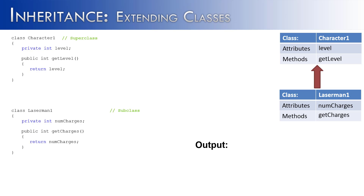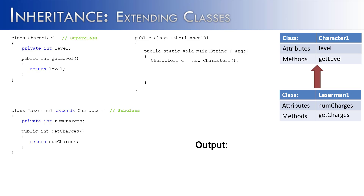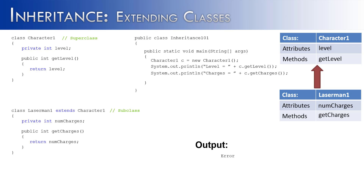To link the two classes, we write: laserMan1 extends character1. That creates our inheritance relationship. Now, if we create an object of the superclass and call getLevel, the output would be 'level1 equals 0'. But if we tried to call getCharges on a superclass object, we would get an error — because getCharges belongs to the subclass, not the superclass. A superclass cannot use the features of a subclass; it only works the other way around.